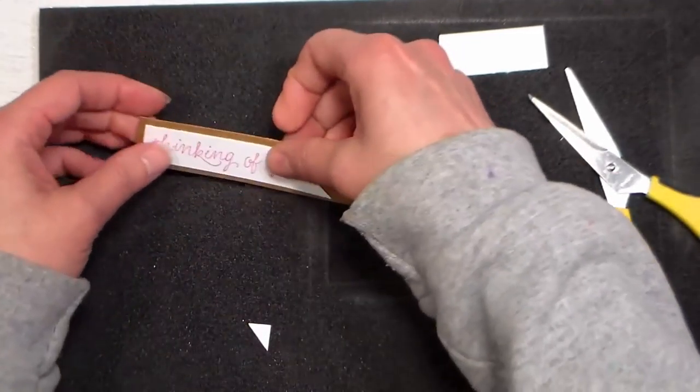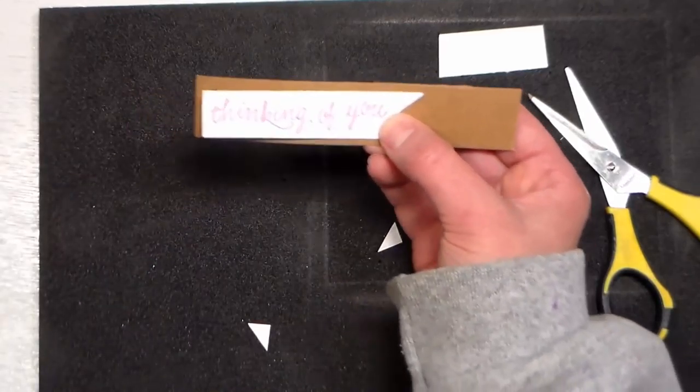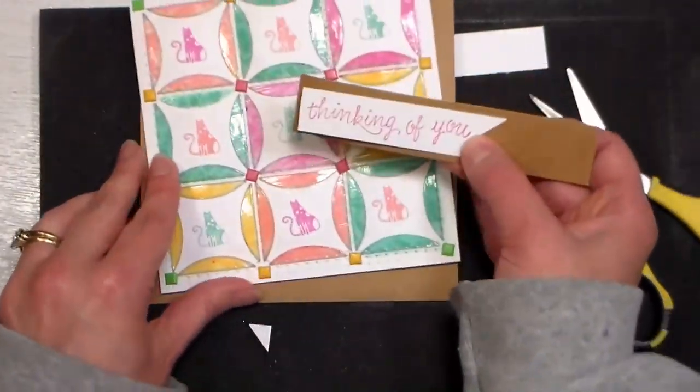So you don't need to have banner dies for this—you can totally do it by hand. It's also easier than going to your die box, getting the die, putting it through your machine, cranking it through. I mean it's quicker to do it by hand, so why not?